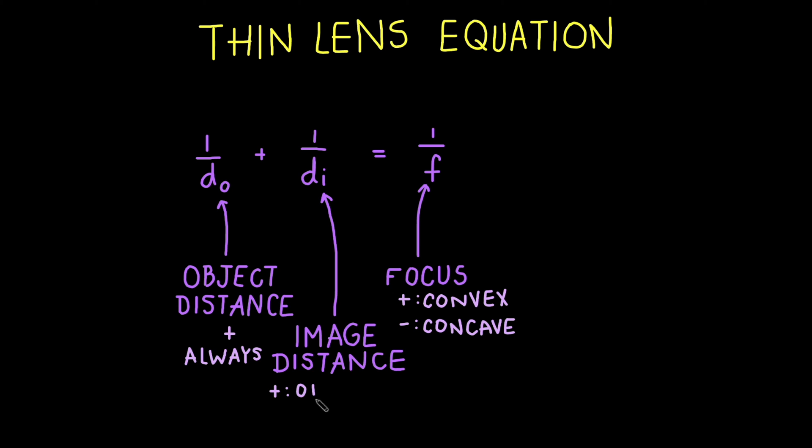The image distance is positive if the image is on the opposite side of the lens than the object, and it's negative if the image is on the same side as the object. We have this convention because images on the opposite side of an object are real images, and the images that are on the same side of the object when we make our depictions are virtual images. So it makes more sense for the virtual ones, the non-real ones to be negative, and real to be positive.